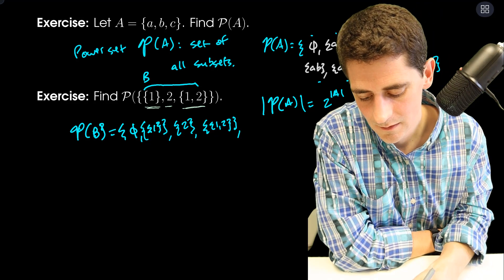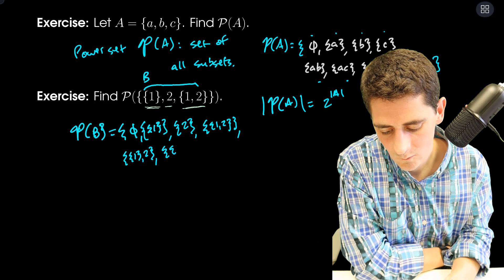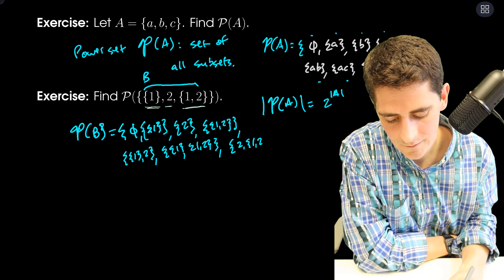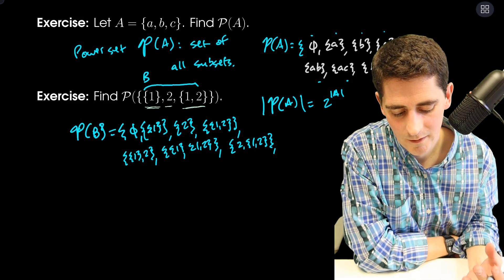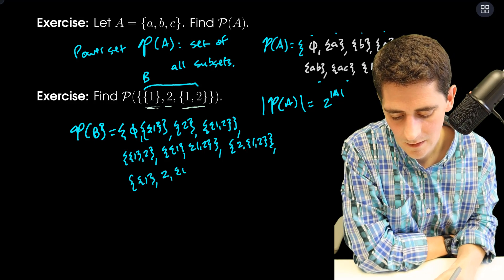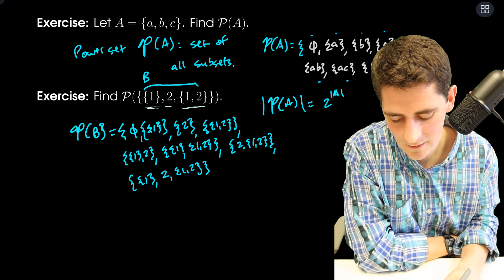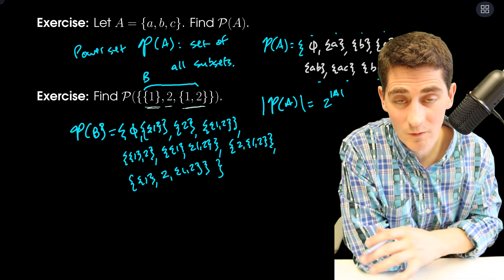Now I need my subsets of cardinality two: {{1}, 2}, {{1}, {1,2}}, and {2, {1,2}}. Then lastly we have the subset which is the set itself: {{1}, 2, {1,2}}. It can be kind of confusing with all these braces.